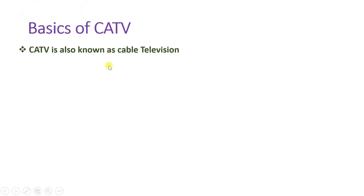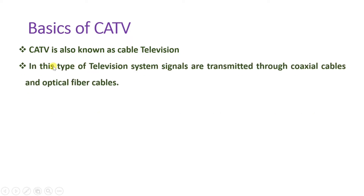CATV is also known as cable television. In this type of television system, signals are transmitted through coaxial cable and optical fiber cables. In CATV systems, optical fiber cables or coaxial cables are connected at different consumers, and consumers are receiving signals by cabling. So dense cabling is there in the CATV system and a distribution system is connected with users.